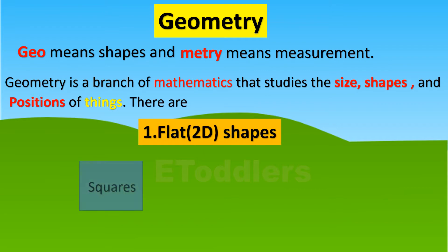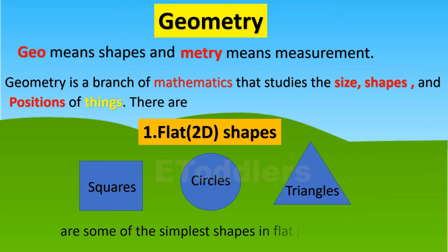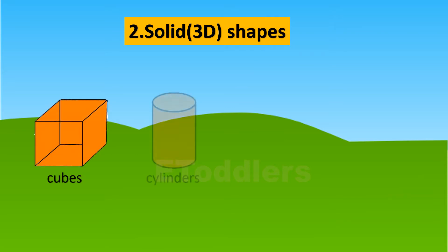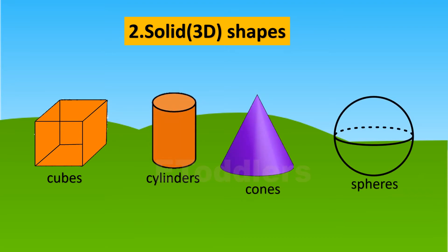Squares, circles, and triangles are some of the simplest shapes in flat geometry. Solid 3D shapes: cubes, cylinders, cones, and spheres are simple shapes in solid geometry.